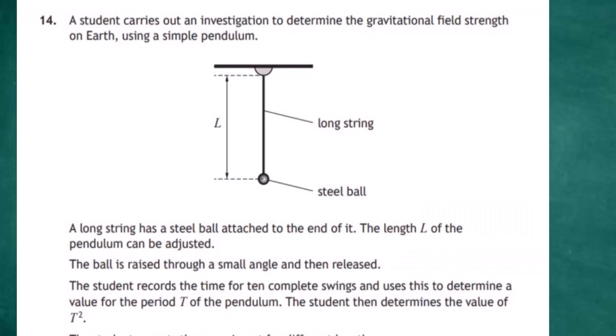Question 14 from Section 2 of the 2022 Higher Physics examination with an SQA. A student carries out an investigation to determine the gravitational field strength of the Earth using a simple pendulum.